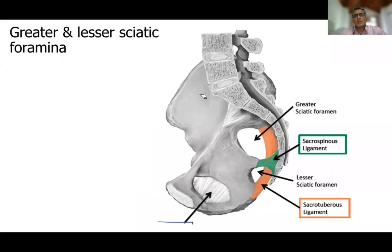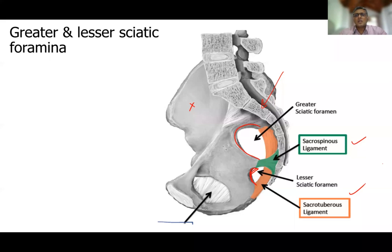When you study the bones of the lower limb, you will see there are two notches on the hip bone: the greater sciatic notch and the lesser sciatic notch. When the pelvis is formed by the two hip bones and the sacrum, two important ligaments — the sacrospinous ligament and the sacrotuberous ligament — convert these notches into two foramina: the greater sciatic foramen and the lesser sciatic foramen.